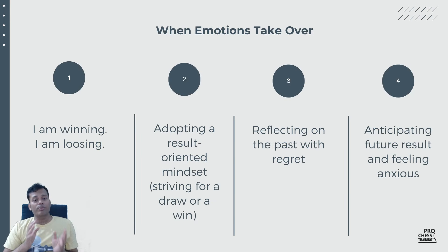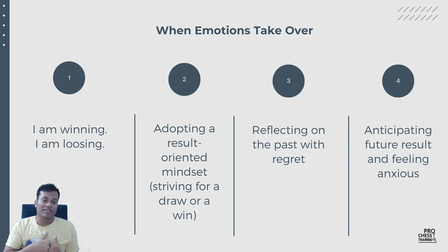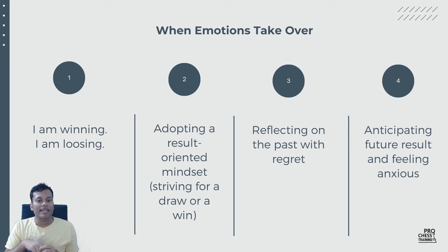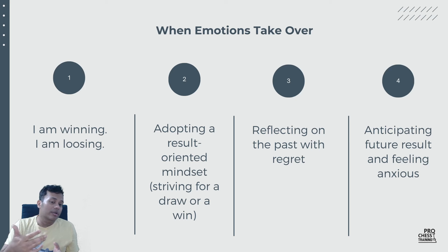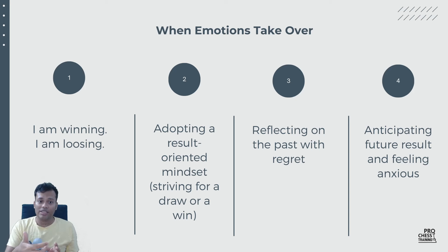Third, when emotions take over. If you have an approach during the game like 'I am winning' or 'I am losing, I played such a terrible move,' that has no connection with the position, and your moves will be filled with emotions and lose objectivity. Second, adopting a result-oriented mindset — you are playing for a draw or for a win. In this case, we tend to see only those variations aligned with our goal, missing the opponent's resources. As a result, blunders might happen.